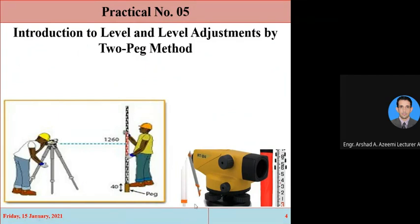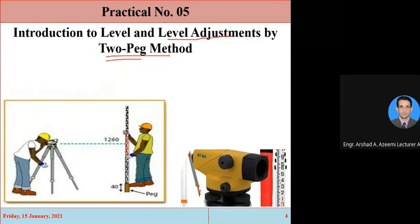So today we will discuss the introduction to the level and level adjustment by two-peg method. What is the level, what is its use, what are its different parts? Before using the level, we will adjust it to eliminate the error. Suppose if there is an error in the instrument, we will find what is the error — you can see the error in a reading, and you can adjust it. For that purpose we are using the two-peg method, where we use observation to know whether this level machine has error or not.